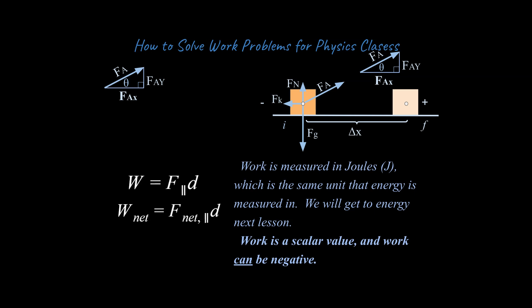I'll do more of a general intro for energy in my next lesson. I do want to say that work is a scalar value. The reasons for that are kind of complex, but work can be negative — this can be confusing to students the first time they're learning this. I've used temperature as an example for a scalar value. Temperature and mass are good scalar value examples. On a number line, you could have negative values for temperature — negative degrees Fahrenheit or degrees Celsius. And in a similar way, even though work is scalar, you can have negative values for it.